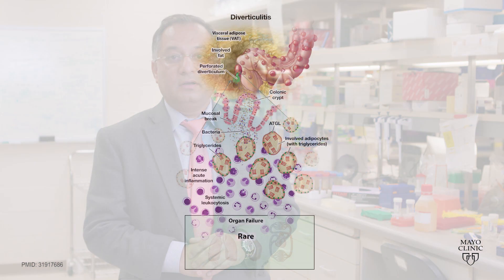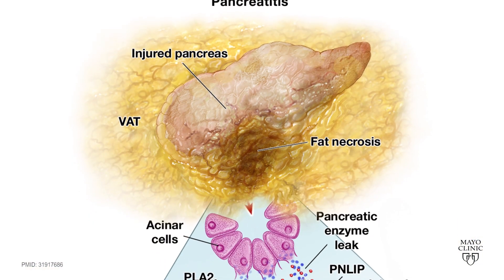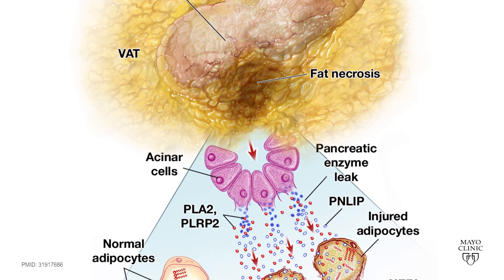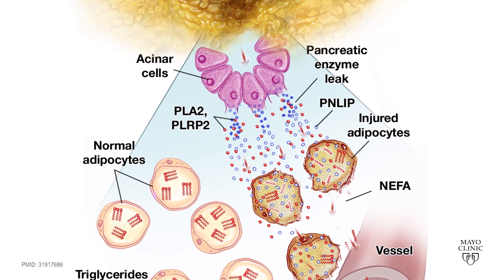In summary, PNLIP can worsen visceral fat involvement and cause severe inflammation and organ failure. While in diverticulitis, in which there is a colonic perforation and leakage of stool into the fat, there can be intense inflammation, but in the absence of lipolysis this is typically self-limited. Recent studies even show that mild attacks may not need antibiotics. However, in pancreatitis, the spillage of PNLIP from the damaged pancreas into the visceral fat can cause this fat to be broken down into non-esterified fatty acids.